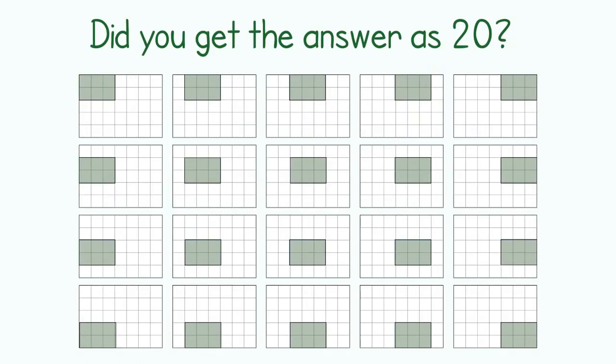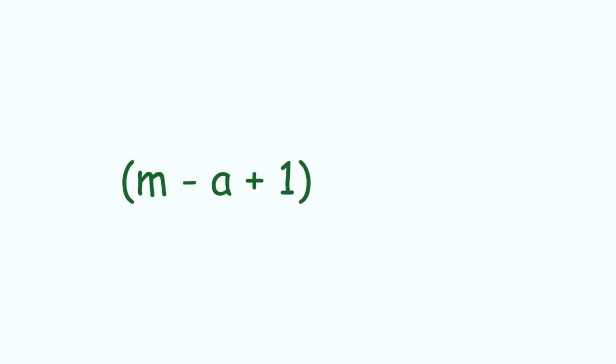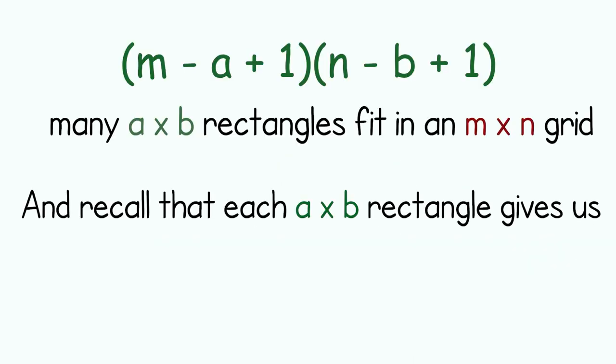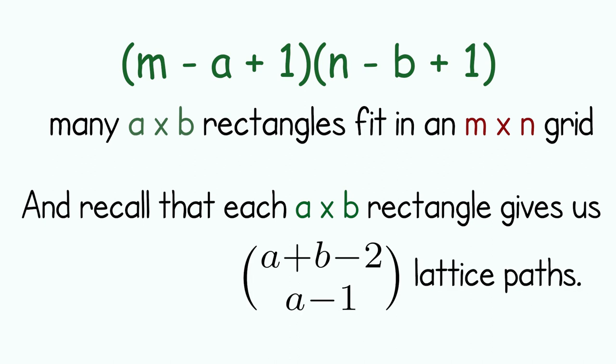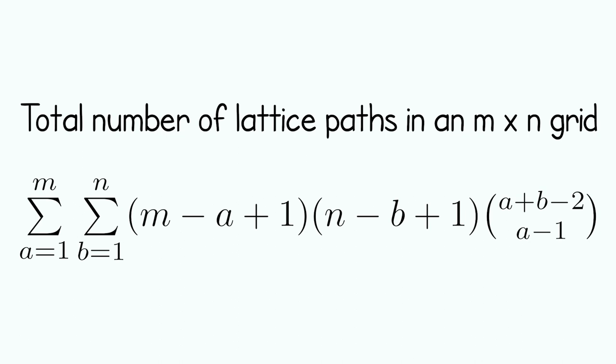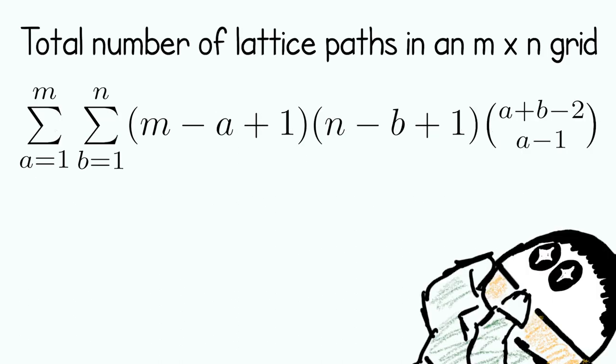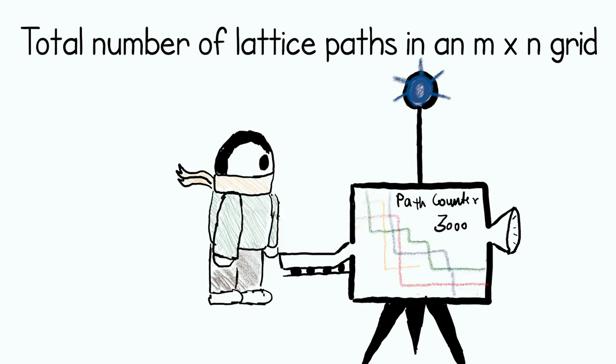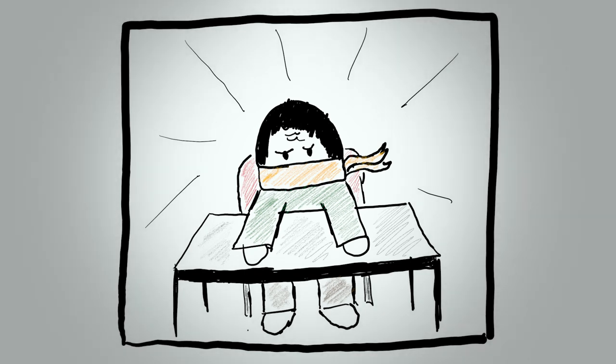Did you get the answer as 20? For the general case, you can fit M minus A plus 1 times N minus B plus 1 rectangles and each of these rectangles gives us A plus B minus 2 choose A minus 1 paths. By changing A and B with A going from 1 to M and B going from 1 to N, then adding all of these up gives us the total number of paths. If you look at it, it is definitely a neat sum, but it's not a proper formula. What I wanted was an expression where I could just plug in M and N and get the number of paths without doing all of these sums. I tried to obtain this formula by simplifying the sum, but I was stuck. So I did what any self-respecting graduate students does when they are stuck.